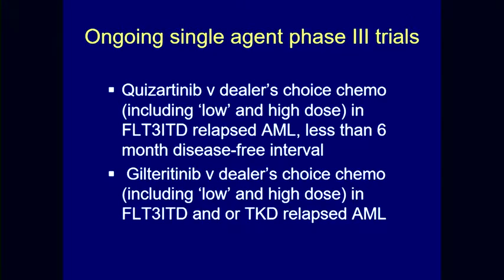The data was not sufficient to get these approved as single agents, but drug companies feel differently. There are two important ongoing trials at the Harvard Cancer Center. The first is quizartinib versus dealer's choice chemotherapy in relapsed FLT3 AML — requiring an ITD mutation, not a point mutation, with less than six months disease-free interval. The second is gilteritinib versus chemotherapy for both FLT3 ITD and TKD relapsed AML, with a more relaxed disease-free interval eligibility. Both trials use a two-to-one randomization, with one-third of patients getting a preselected chemotherapy regimen such as FLAG-IDA or decitabine.